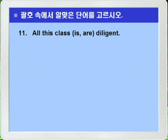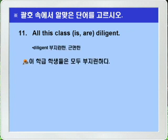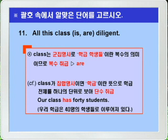Question 11: 'All this class is/are diligent.' Here 'class' is used as a distributive noun referring to each individual student, so despite being singular in form it has plural meaning. Therefore 'are' is the answer. If 'class' were used as a collective noun meaning the class as a whole, it would be treated as singular — e.g., 'Our class has 40 students.' Answer: All this class are diligent.